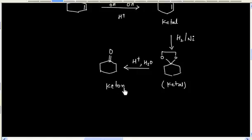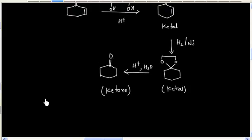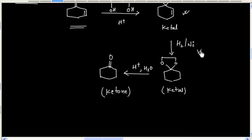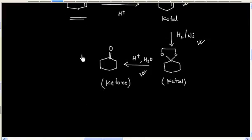Hydrolysis of ketal will finally give the ketone, and we get the desired product. So first the ketone gets protected, then we have catalytic hydrogenation, and then hydrolysis of ketal gives the ketone.